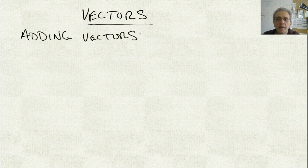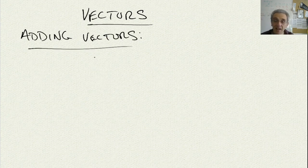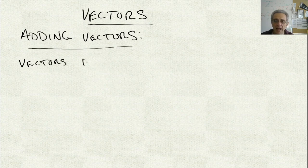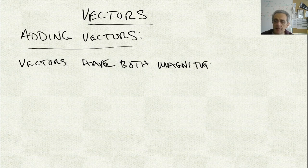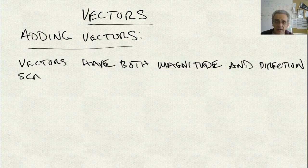But before we get into adding vectors, I want to discuss quickly the definition of vectors. A vector, or vectors, have both magnitude and direction. Scalars, on the other hand, only have magnitude.